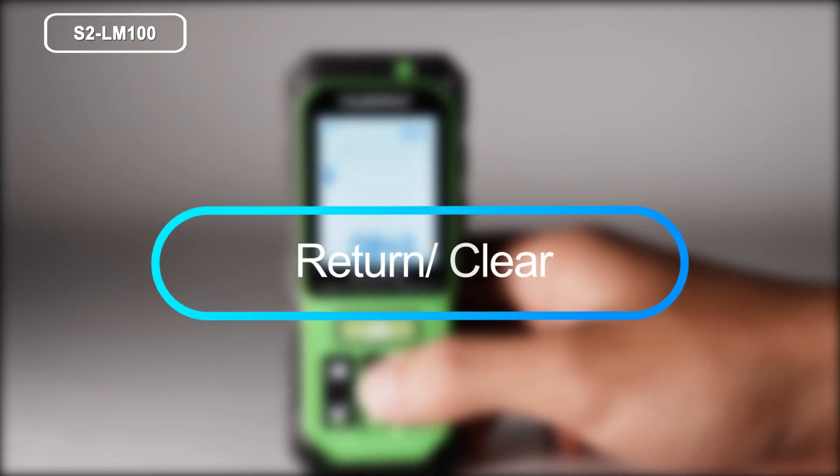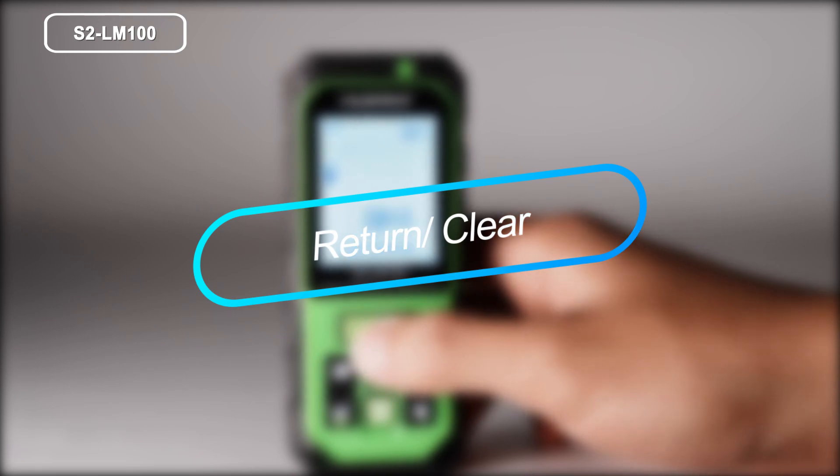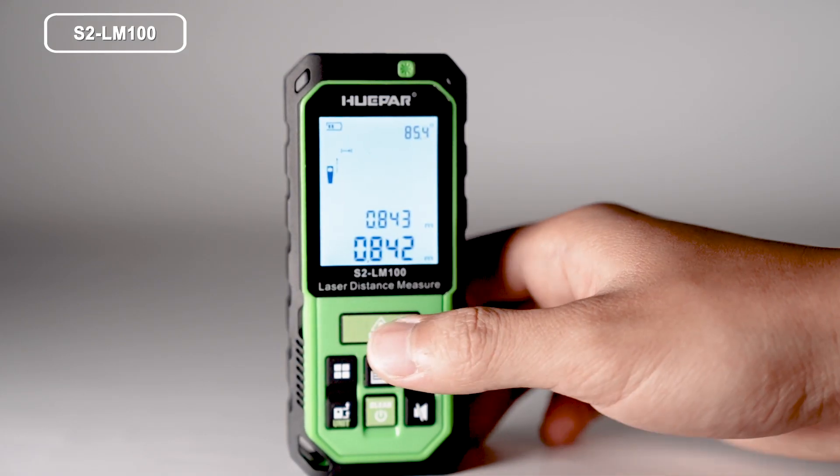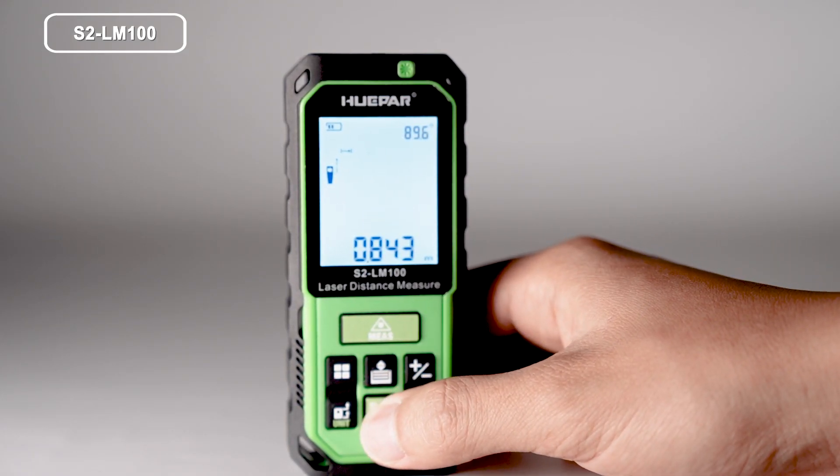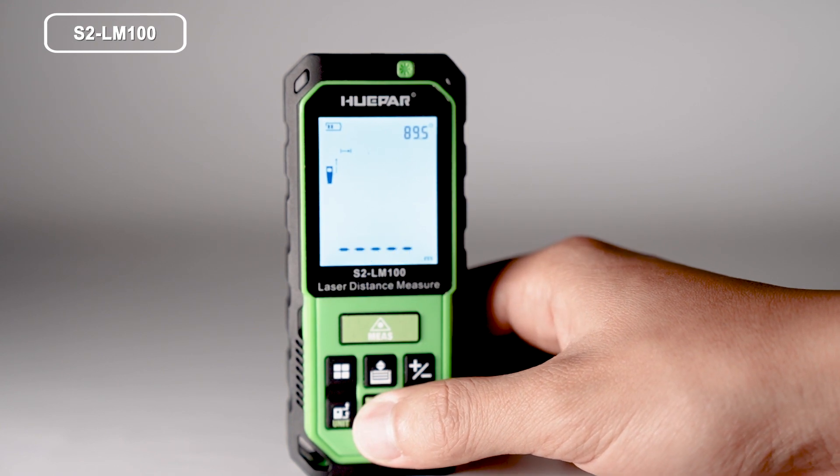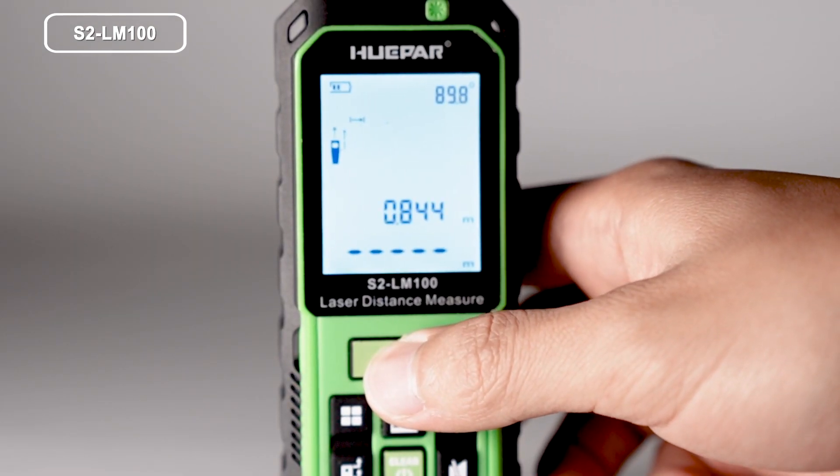Setting. Return and clear. When measuring, press the button to undo the last action or clear measured value. Then press the button to re-measure.